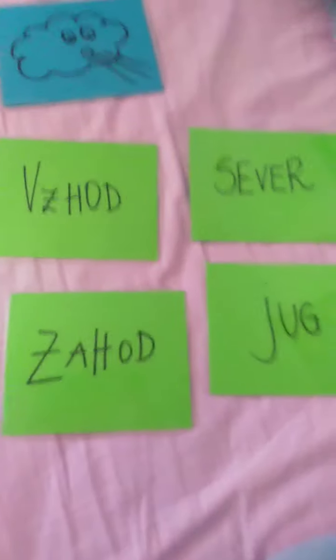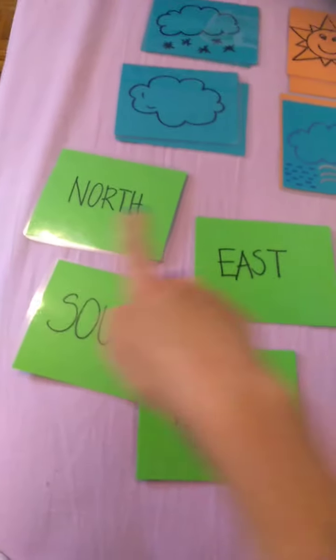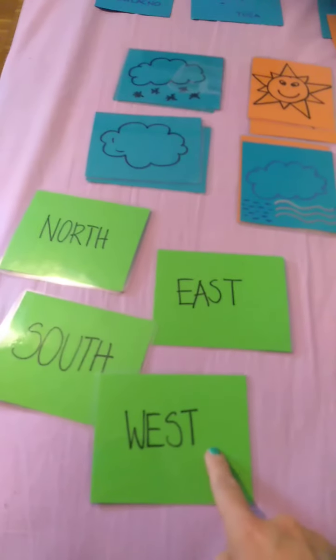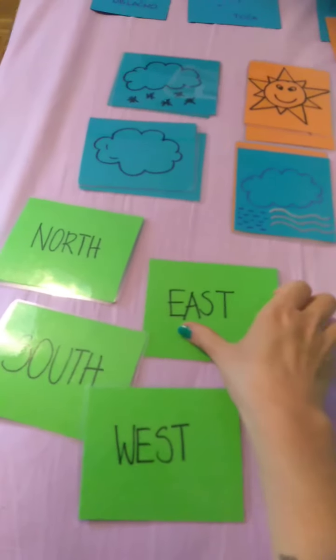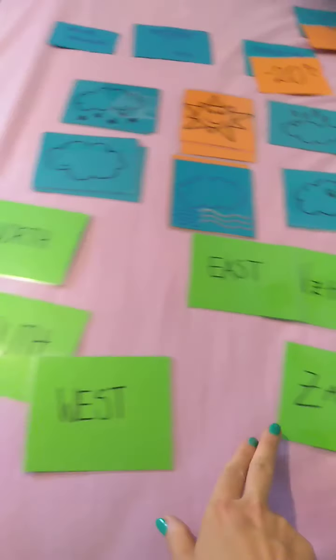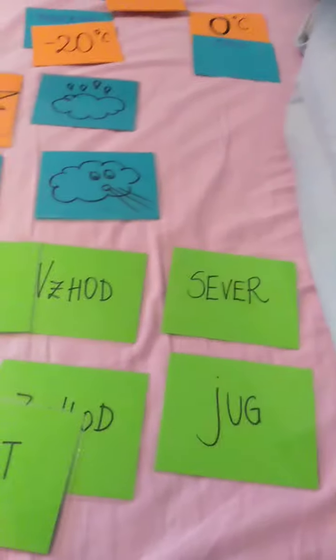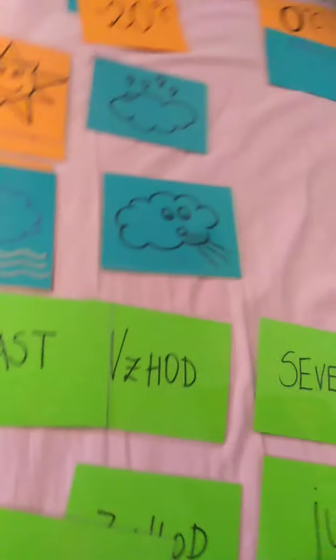Okay, let's repeat some cardinal points and weather symbols today. Let's take a look at this. Which one should I pick? Yeah, this one. Vzhod - east, zahod - west, sever and jug.